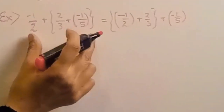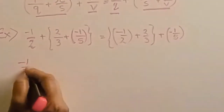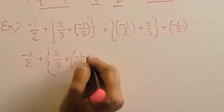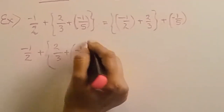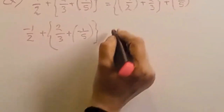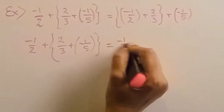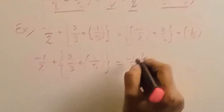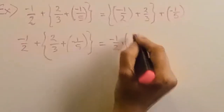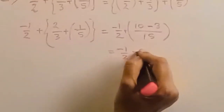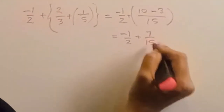We will take one example. Left hand side: 1 by 2 plus, in the bracket, 2 by 3 plus minus 1 by 5. We solve the bracket first: 2 fives are 10, minus 3 ones are 3, upon 15, which is 7 by 15. Then minus 1 by 2 as it is. So we have 1 by 2 plus 7 by 15.